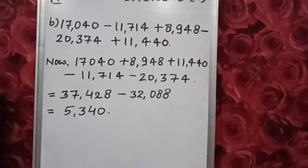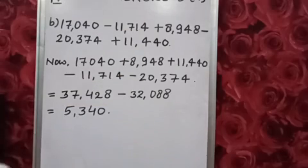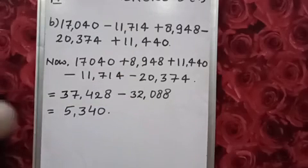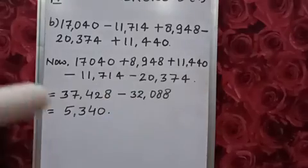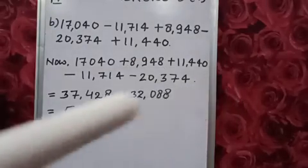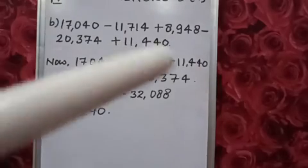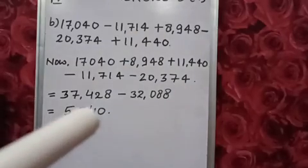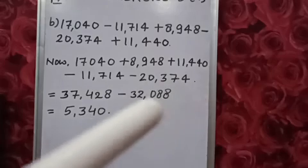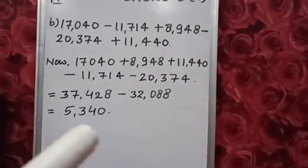Thank you, students. I hope this solution is clear — it's very simple. Again, I am repeating: you will write all the positive numbers together, then all the negative numbers together. Add all the positive numbers, then add all the negative numbers, and then do the subtraction. You will get your answer.